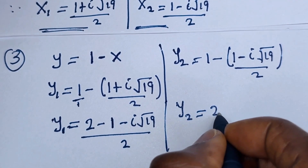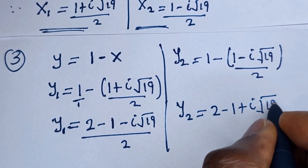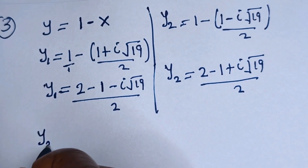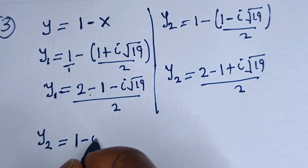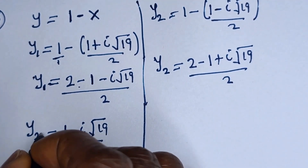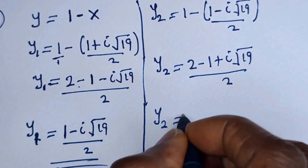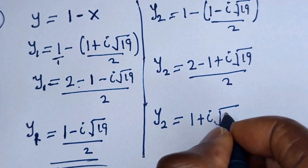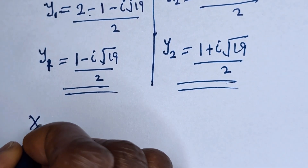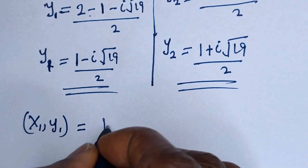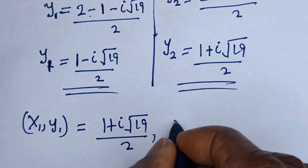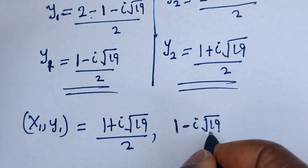Y2 is equal to 2 minus (1 plus i√19) over 2, so Y2 is equal to (1 minus i√19) over 2. Therefore our final answers are: S1, Y1 equals ((1 plus i√19) over 2, (1 minus i√19) over 2).